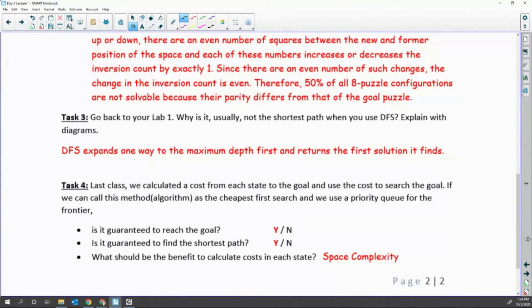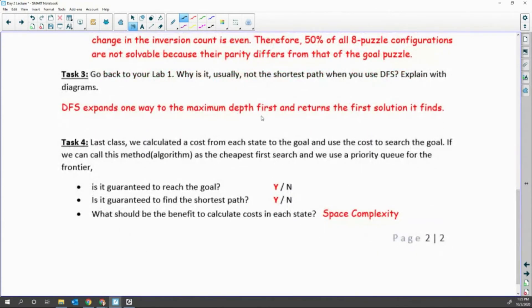If we go back to the 8-puzzle problems, DFS does not guarantee the shortest path. Because DFS is finding the first solution it finds, then which depth we go, we do not know. So I can draw some diagram from the initial to the goal.